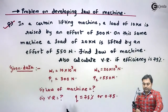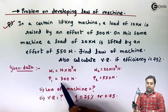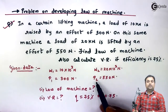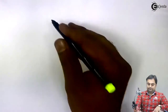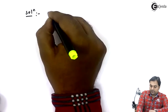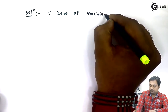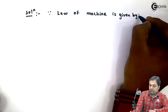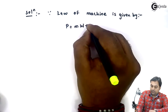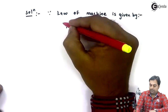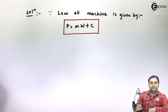The first part is to find the law of machine. Since two values of load and effort are given, we can apply the law of machine. The law of machine is given by the formula: P = mW + C, where m and C are constants to be determined.